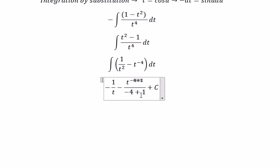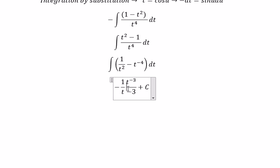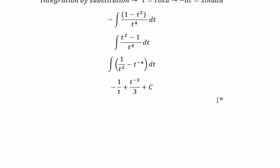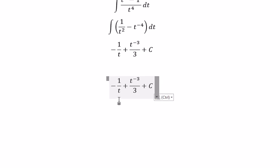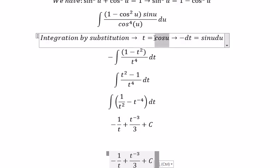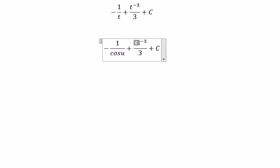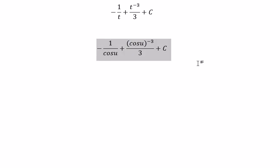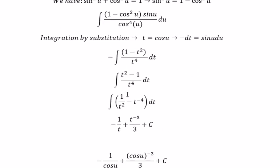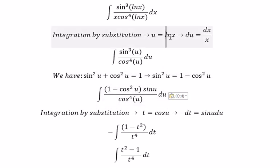We simplify: the exponent becomes negative 3 and the denominator is negative 3. Negative divided by negative gives positive. Now we back-substitute: t is replaced by cosine(u), and u is replaced by ln(s). This gives us the final answer.